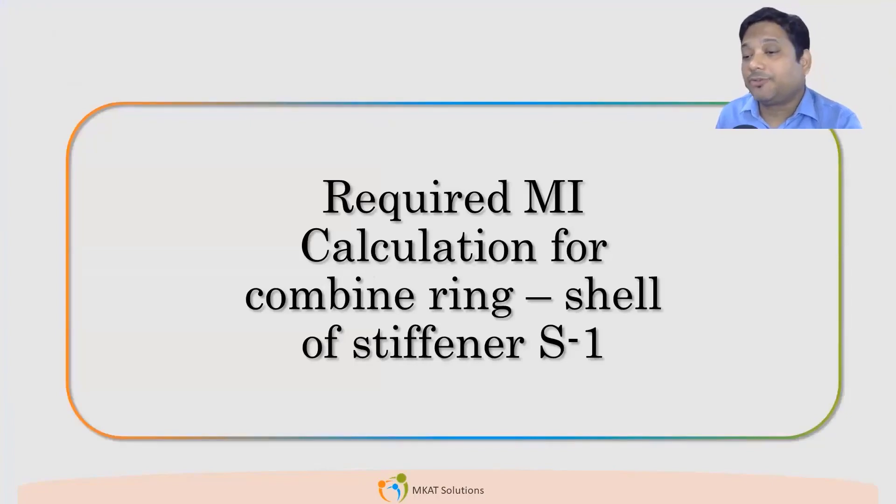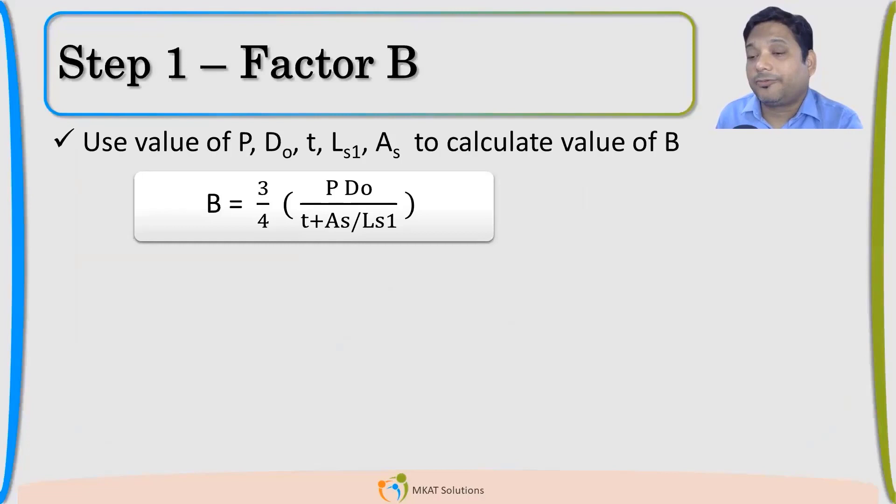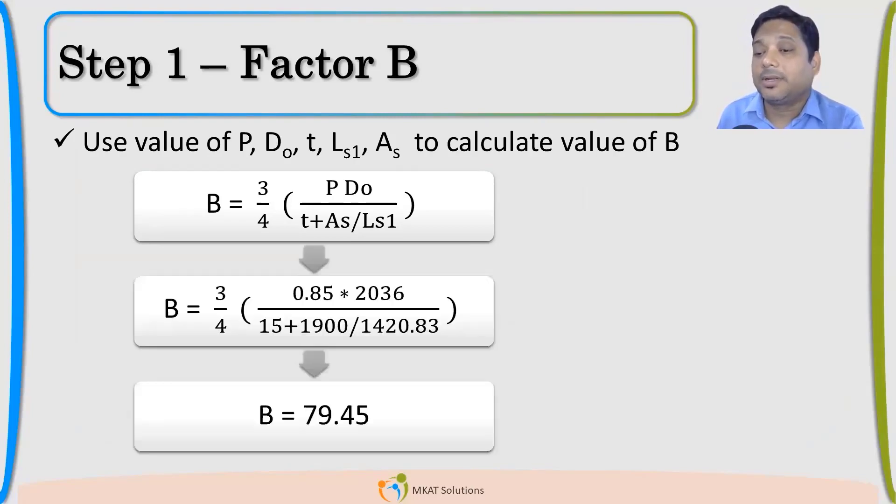Now, we are in position to find the required moment of inertia and we are taking a case where shell is also part. That is the stringent case or maybe complicated case for calculation. We have taken that where your shell is also part of the stiffener. What is our first activity? We have to find the factor B. To find the factor B, we need this value P, D0, T, AS, LS1. All the values we have already calculated. We will just put all that values here.